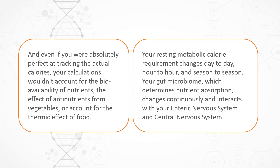Even if you were perfect at tracking actual calories, your calculations would not account for the bioavailability of nutrients, the anti-nutrients from vegetables, and the thermic effect of food. Your resting metabolic caloric requirement changes based upon circadian rhythm — day to day, hour to hour, season to season. Your gut microbiome changes nearly continuously, and it's the interaction between your central nervous system and your enteric nervous system in your gut that determines a whole host of basal metabolic rate functions. It's probably way too complicated to look at a food label and say this is going to be 250 calories for me.